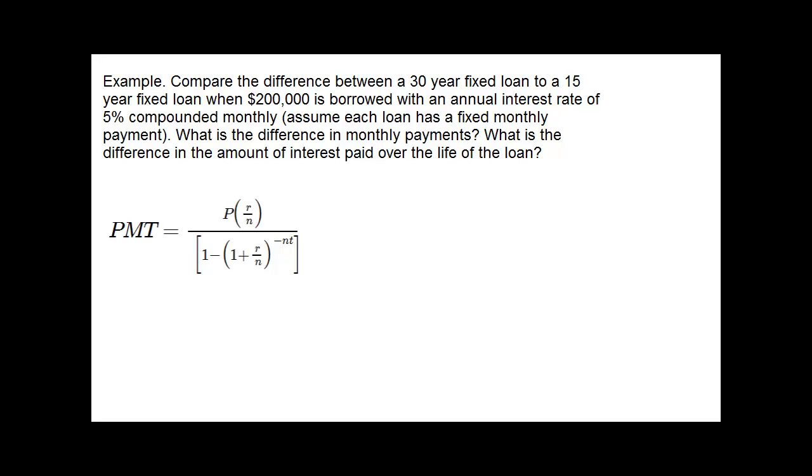In this example we're going to compare a 30-year fixed loan and a 15-year fixed loan. We're going to keep the principal balance the same, so the loan amount is $200,000 for each loan, and the interest rate will be kept the same between the two. Both of these would be compounded monthly with monthly payments.